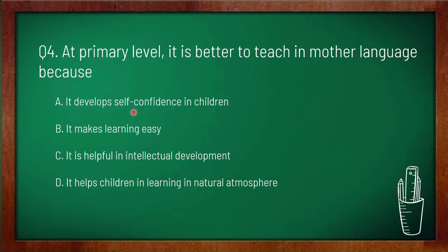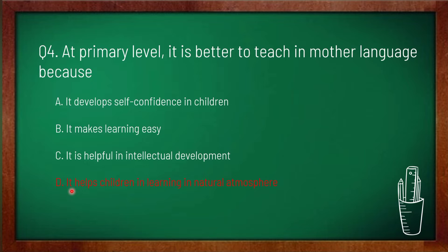Option A: it develops self-confidence in children, option B: it makes learning easy, option C: it is helpful in intellectual development, option D: it helps children learn in a natural atmosphere. Option D is correct, because mother tongue develops a child's personal, social and cultural identity. Using mother tongue helps a child develop critical thinking and literacy skills. Research shows children learning in their mother tongue adopt a better understanding of the curriculum.